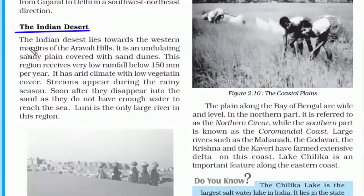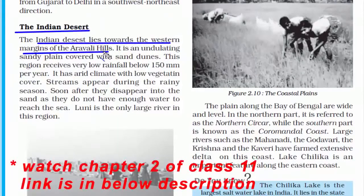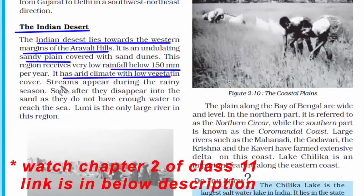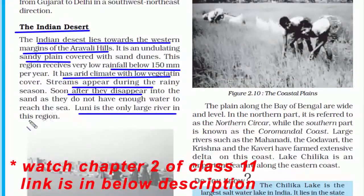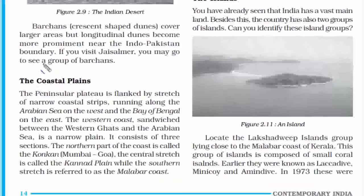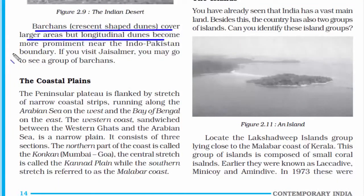The fourth feature is the Indian Desert, lying towards the western side near the Aravali Hills. It consists of sandy plains and receives very low rainfall — below 150 mm per year. It has an arid climate, meaning hot and dry with low vegetation cover. Rivers are only seen during the rainy season; the Luni is the only large river in this region. The region is famous for barchans, which are crescent-shaped sand dunes.